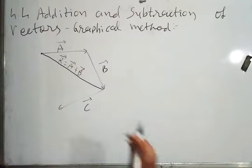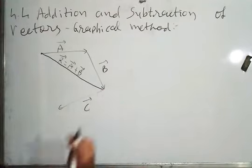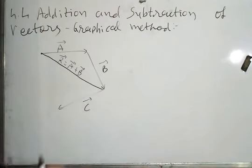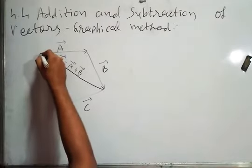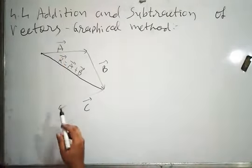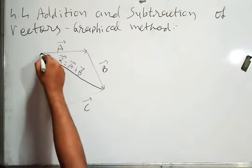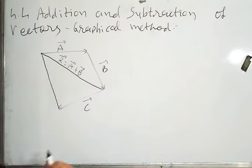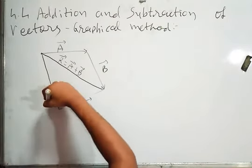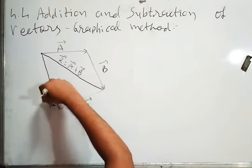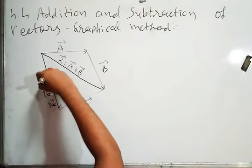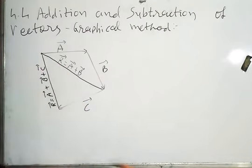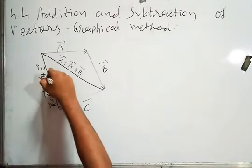The head of that resultant lies on the tail of vector C. So I draw another resultant from that tail to C's head. This will be the resultant of all three vectors: vector R equals vector A plus vector B plus vector C. Initially we found the resultant of vectors A and B first.